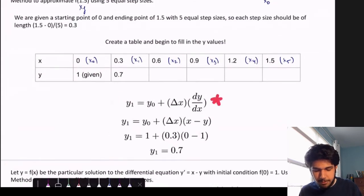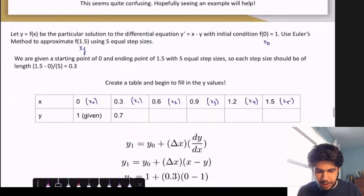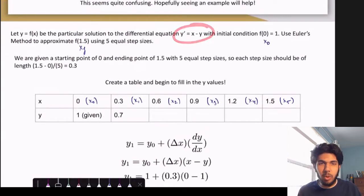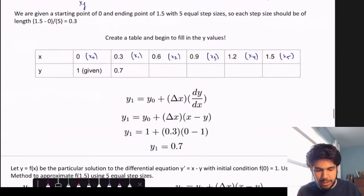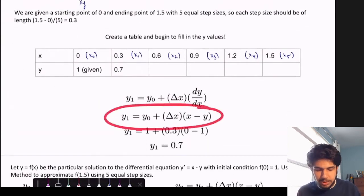We use that formula from above. So y naught is the previous y value, which is 1. Delta x is our step size, which is 0.3. And then dy dx, to get our slope of the tangent line, we'll use what we're given, dy dx equals x minus y. So this is our equation.